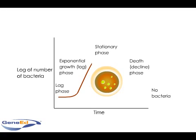That is, one bacterium divides into two, which replicate into four, which then produce eight, and each individual bacterium in the process replicates at a constant rate. As the bacterial population continues to grow,